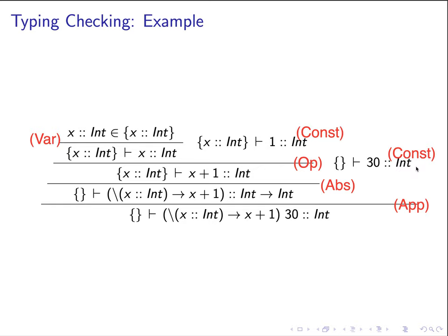For the second part we apply the const rule. For the first part, we apply the abs rule because this is a lambda abstraction. We have to apply the deduction system to show that this is well-typed if, under the new type environment gamma extended with x mapping to integer, we are able to verify that the function body x plus 1 has the type integer, which is the return type.